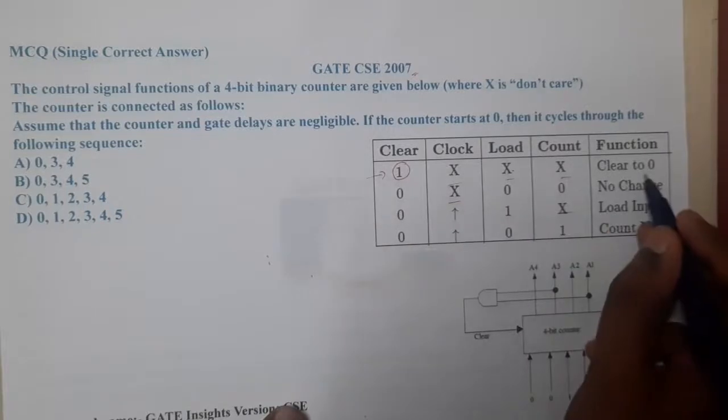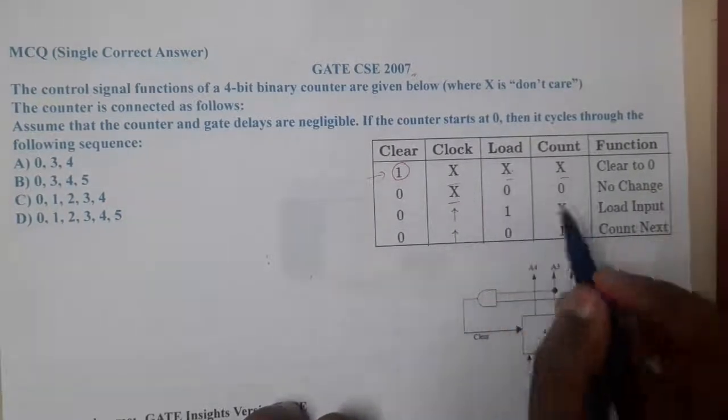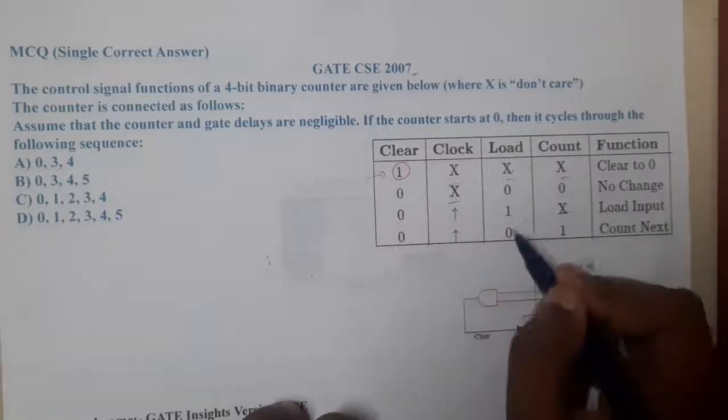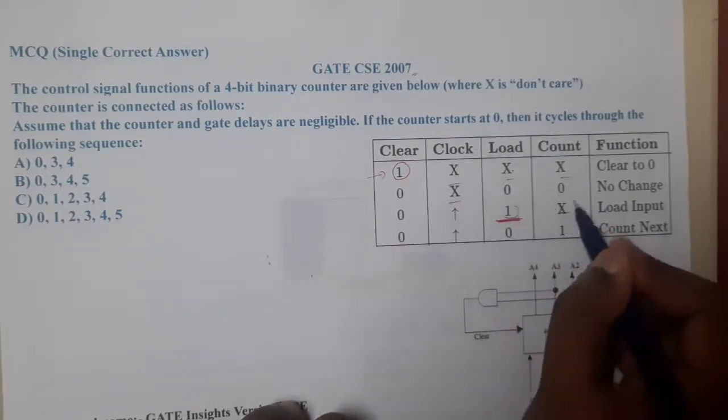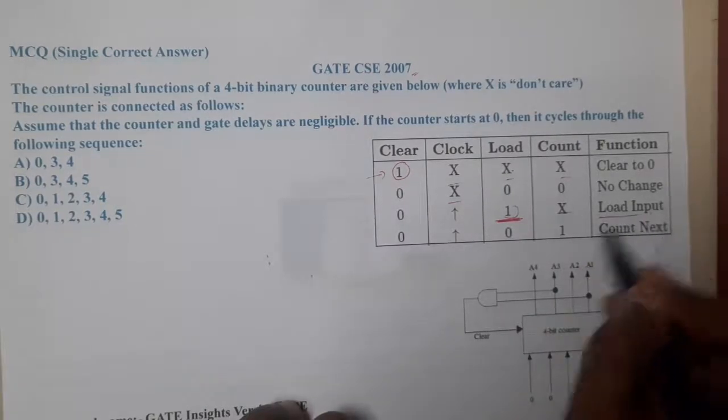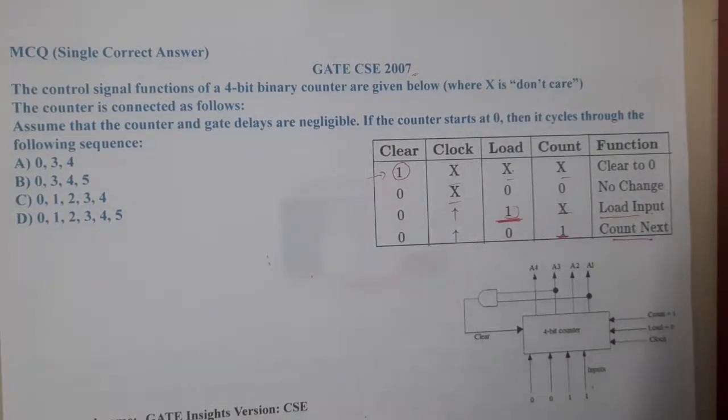After clear, so clear has the highest priority. Once clear is 1, it is going to clear. Whenever clock might be anything, there is no change. Whenever load is 1, load has highest priority than count. At that time it will load, whereas whenever count equals 1, it is going to count the next. This question seems to be a bit interesting. Let us start analyzing the question.